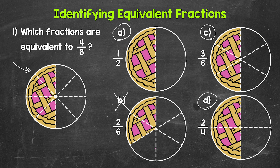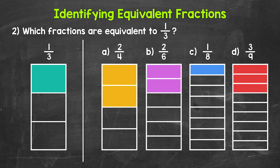Let's move on to number two. We have: which fractions are equivalent to one third? Here is a model of one third that we can go off of — one equal part is shaded in out of three total equal parts. Let's start with A, two fourths. Is two fourths equivalent? No, two fourths is greater than one third. We can see that more of the rectangle is shaded in — a greater amount, a greater part of the whole rectangle. So this is not equivalent.